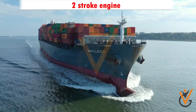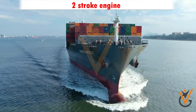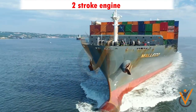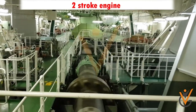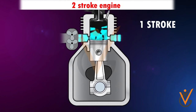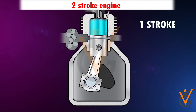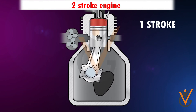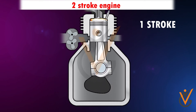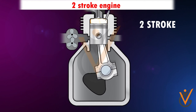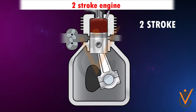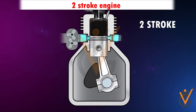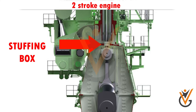Two-stroke engines are used for vessel propulsion and are bigger in size compared to four-stroke engines. In this engine, the complete sequence is completed in two cycles: the suction and compression stroke, which is the upward movement of the piston to draw fresh air and compress the air-fuel mixture; and the power and exhaust stroke, which is the downward movement of the piston due to an explosion, followed by removal of exhaust through an exhaust valve fitted on top of the cylinder. A stuffing box is used to separate and seal the crankcase from the combustion chamber.